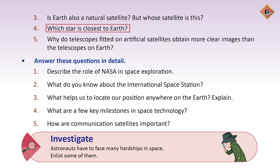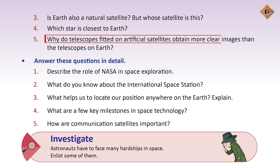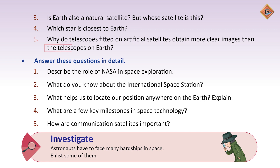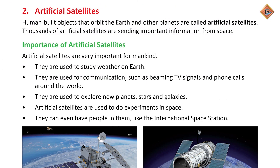The Sun is the closest star to Earth. Why do telescopes fitted on artificial satellites obtain more clear images than telescopes on the Earth? The lack of atmospheric interference allows telescopes on artificial satellites to obtain clearer images than ground-based telescopes, even those with much larger mirrors.